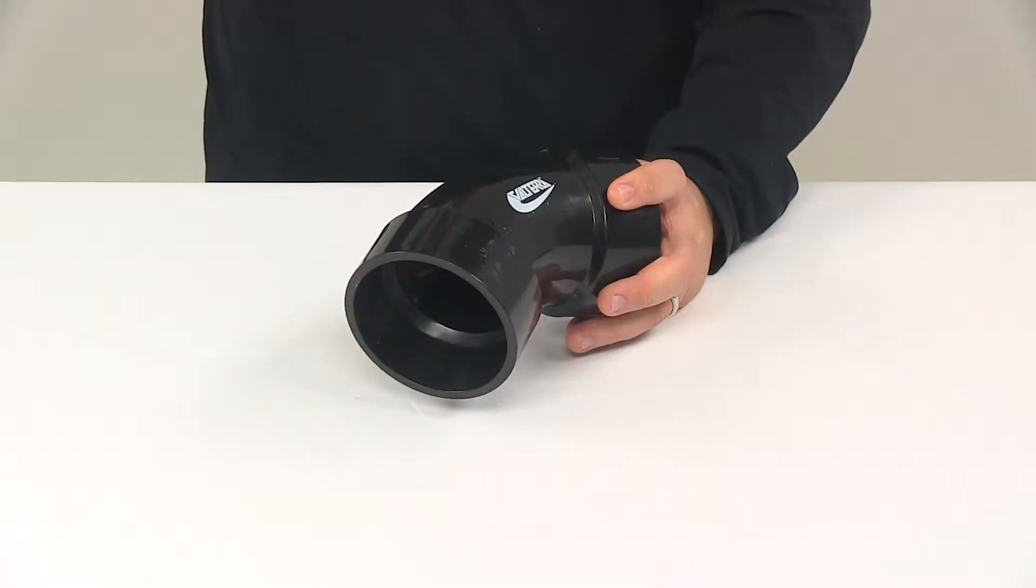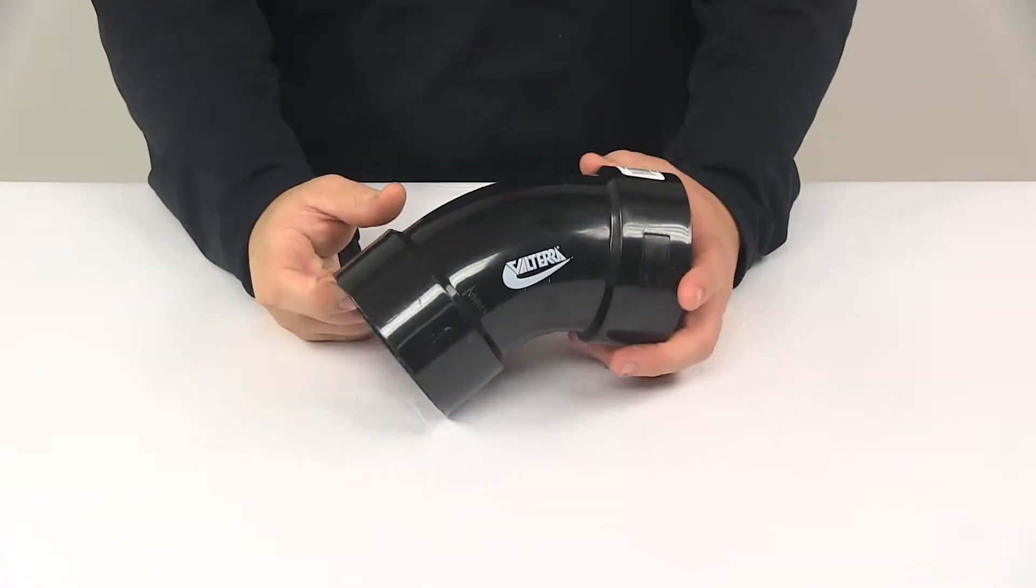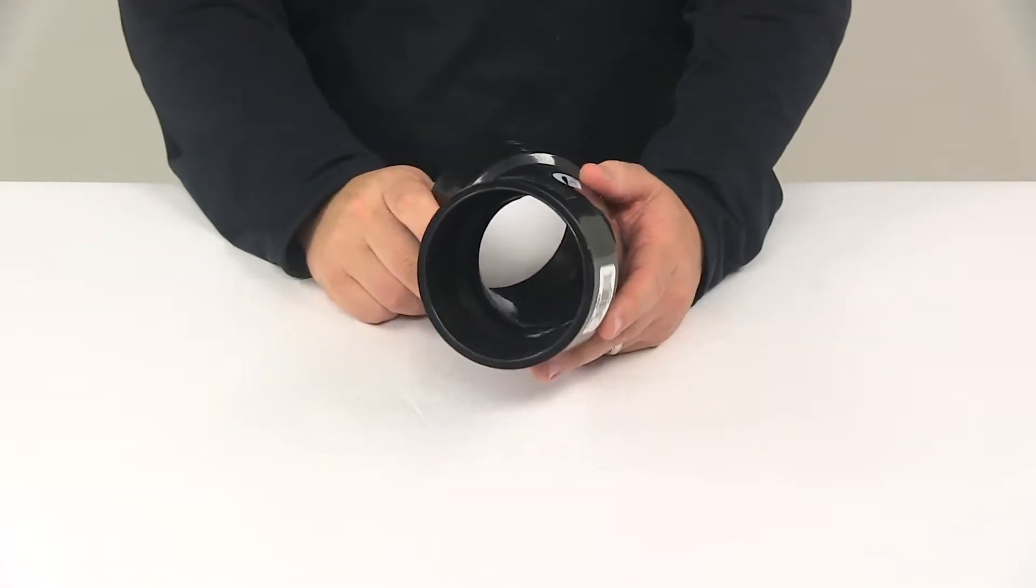This fitting allows you to connect two pipes together when you need a 45 degree bend. DWV stands for drain, waste and ventilation.